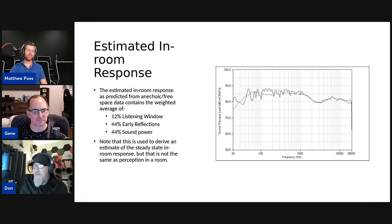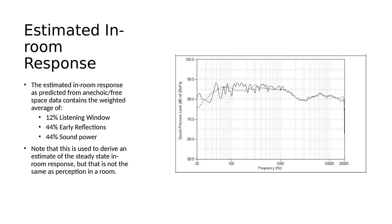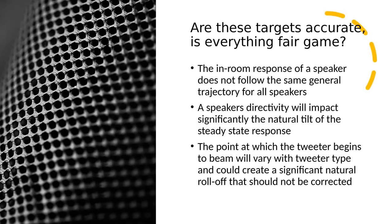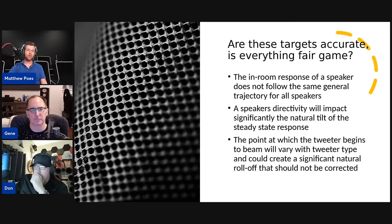Thankfully today it's not that hard to change the general shape of the response for a speaker. The estimated in-room response is predicted from anechoic free-space data and contains a weighted average: 12% listening window, 44% early reflections, and 44% sound power. This is used to derive an estimate of the steady-state in-room response — but it's not the same as how you perceive sound in a room.